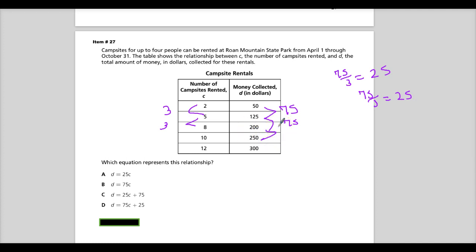250 minus 200, not divided, subtract. Sheesh. I don't know why I keep saying the wrong thing today. This is really plus 75 because it's going up. And then this is only 2.